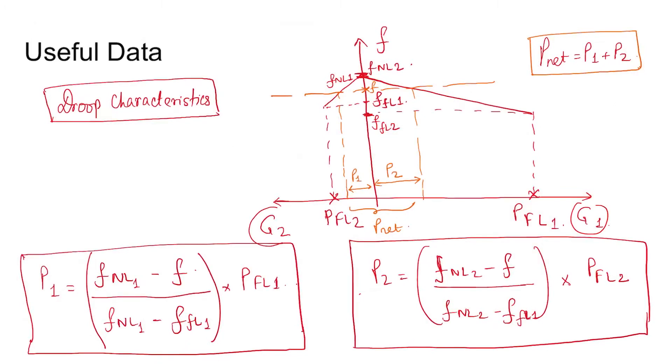So generators one and two are operating in parallel and sharing a net load. Initially when both the generators are not loaded, at no load condition the first generator was operating at frequency no load frequency one and two, f_NL1 and f_NL2.